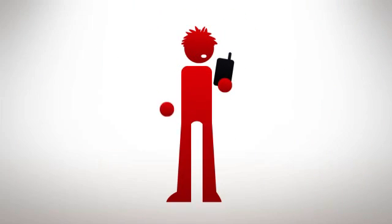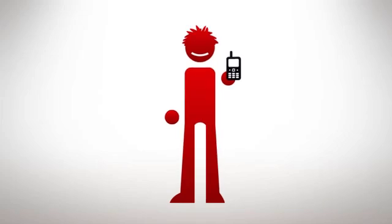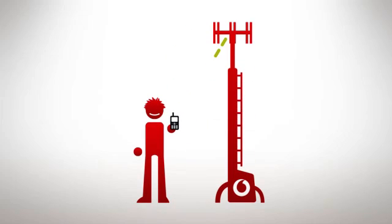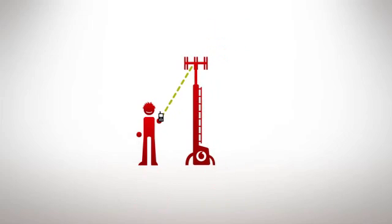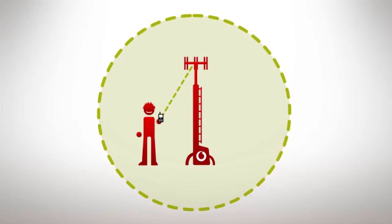How does that little thing do so much? Let's take a quick look. Somewhere near you right now is a base station that knows exactly where your phone is. We call the area covered by the base station a cell. That's why it's a cell phone.